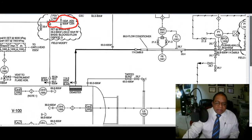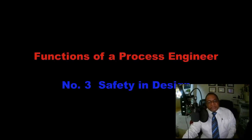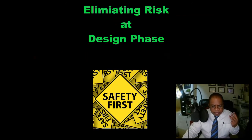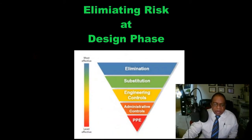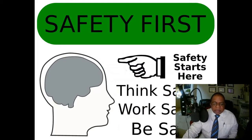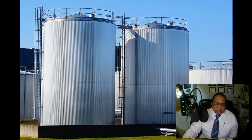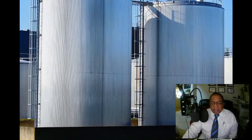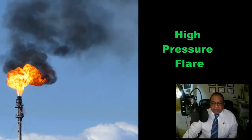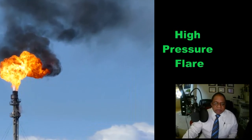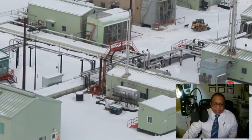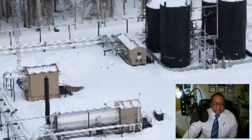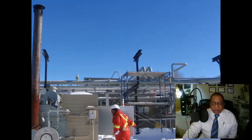Functions of a process engineer — number three: safety in design. While safety is everyone's business, it is the process engineer who will identify potential risk. He will then recommend appropriate devices to be incorporated in the system to remove that risk. He will design equipment that will safely dispose of gas and liquids to the environment.